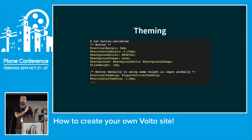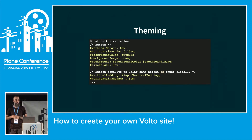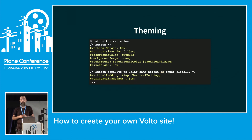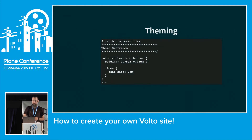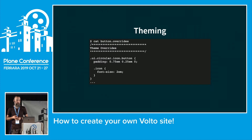First it grabs default variables, then overrides them with the Pastanaga ones, then if you have any defined in your own package it overrides those too. You don't need to copy the whole file — just add a variables file with the specific variables you want to override. For example, if you only want the line height to be 1.2 instead of 1, just write a file with that one variable.